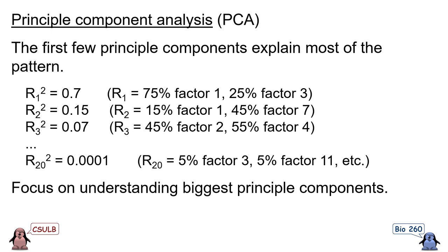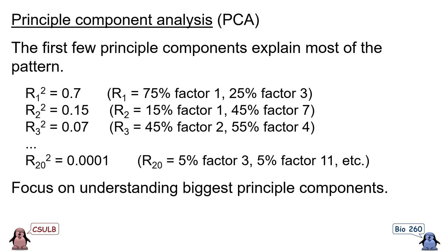Once our computer has done this, the first few principal components will explain most of the pattern. In this example, even though there appear to have been 20 original variables, the first principal component explains 70% of the variation. If we combine the first two principal components, they explain 85% of the variation, and the first three explain 92%. If we can understand what those first three principal components represent, we don't need to worry about the other 17 to understand 92% of what's going on.